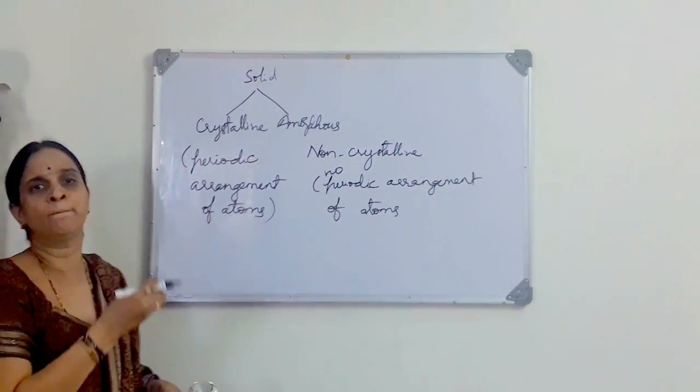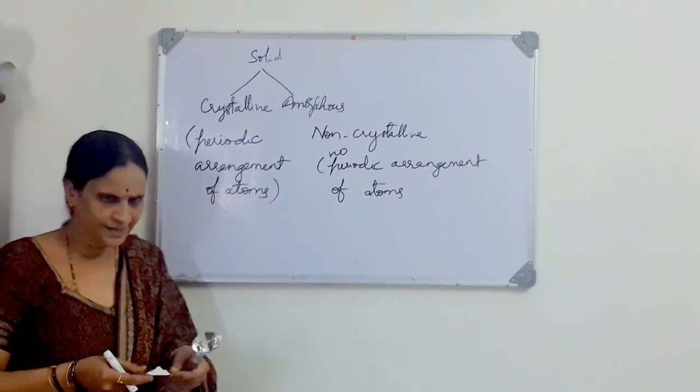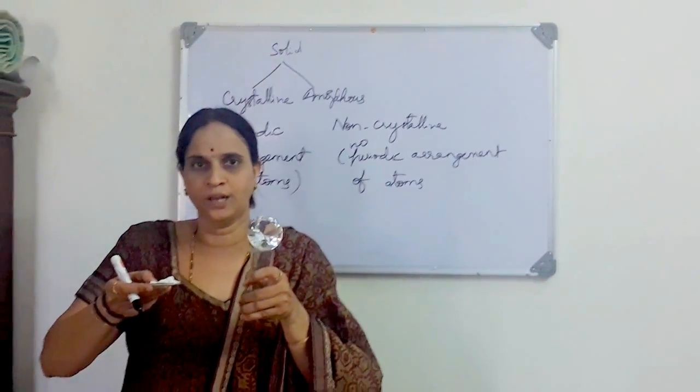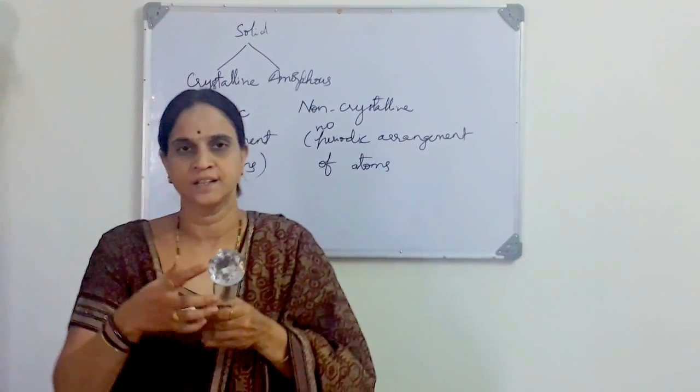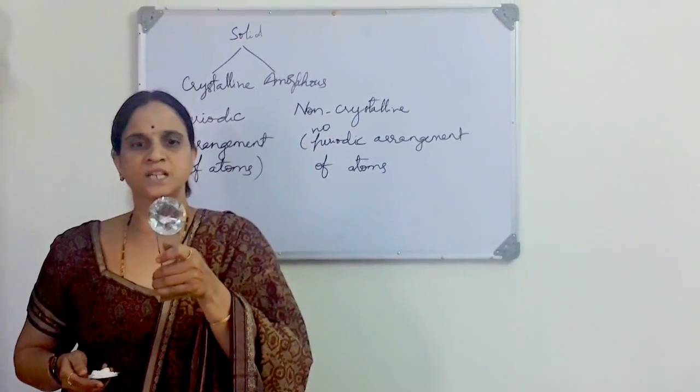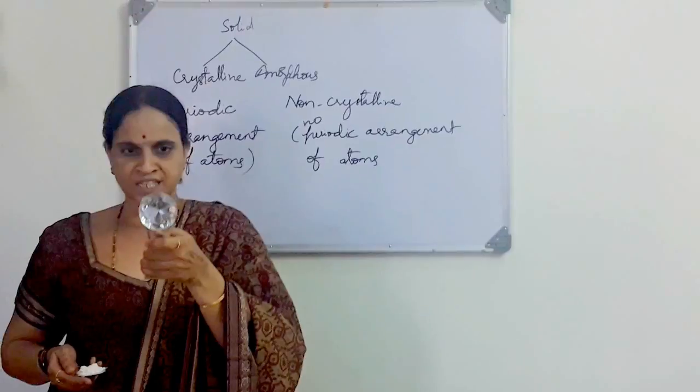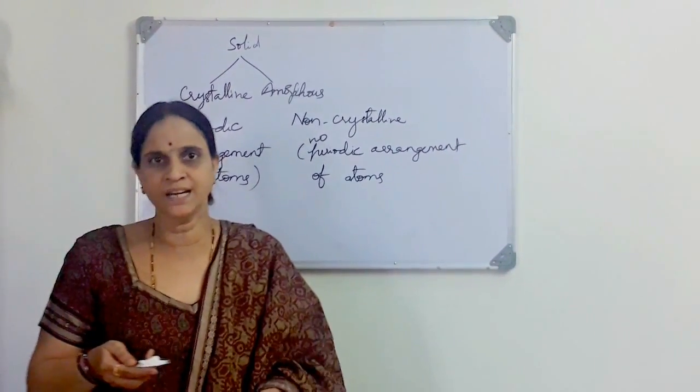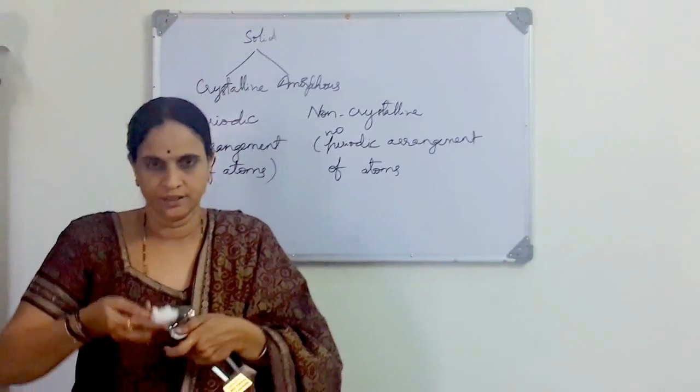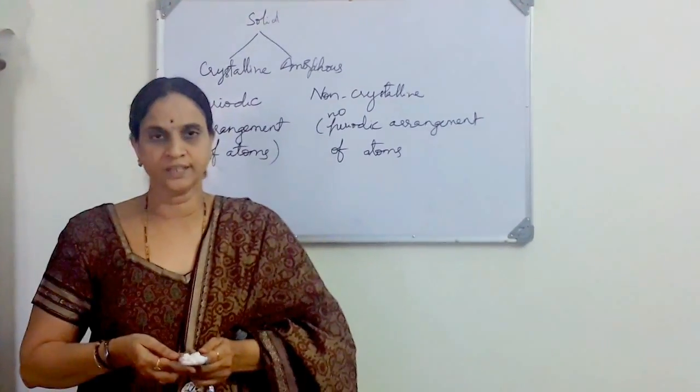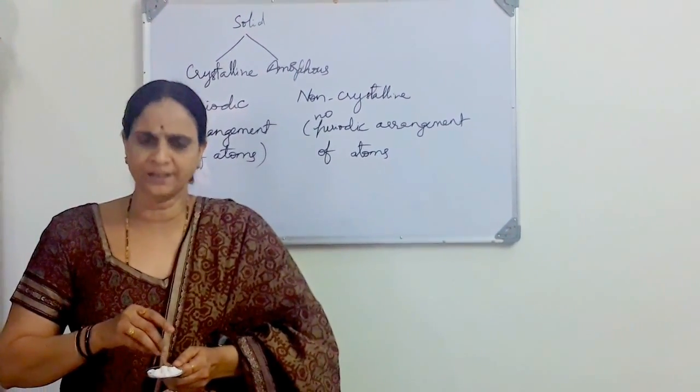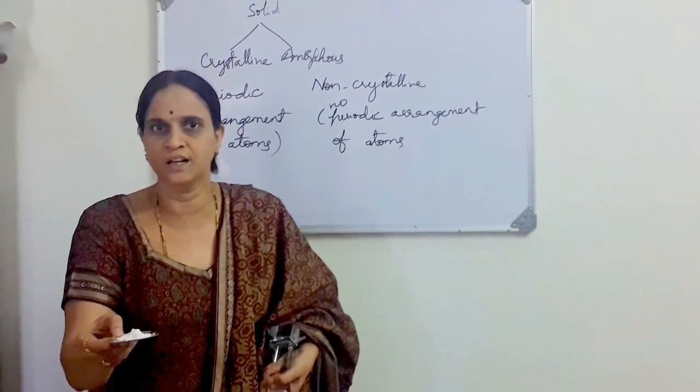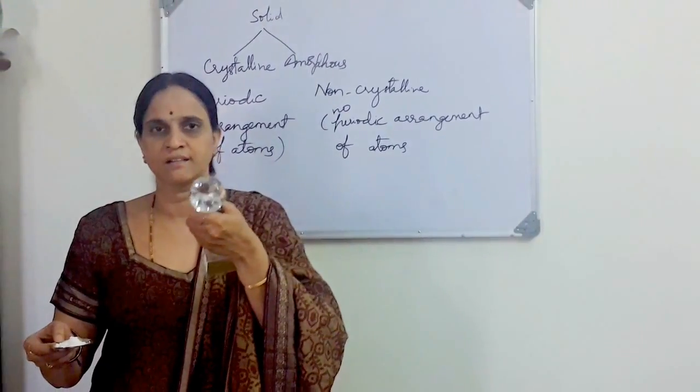There is no pattern which is formed in this solid. Let us see both solids with examples. I just brought two things to you. The first is a crystalline solid. You may be able to observe this crystalline solid, how it looks and what is the periodic arrangement. And the other one is a non-crystalline solid. In this non-crystalline solid, there is no particular pattern or periodic arrangement of atoms.